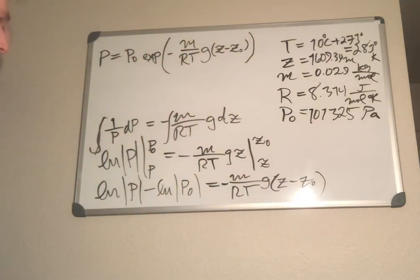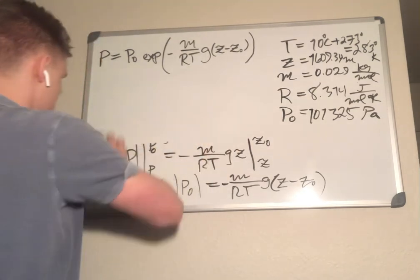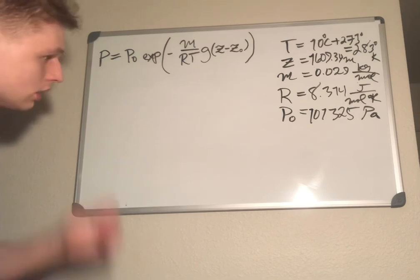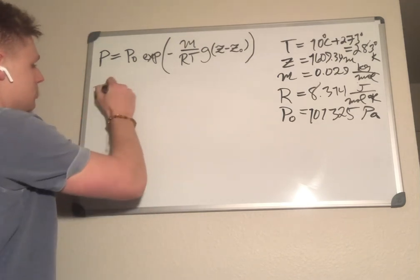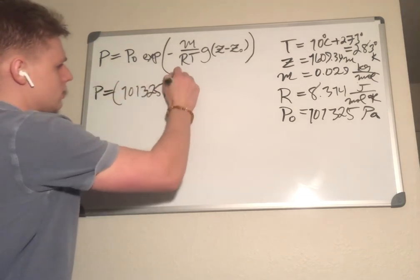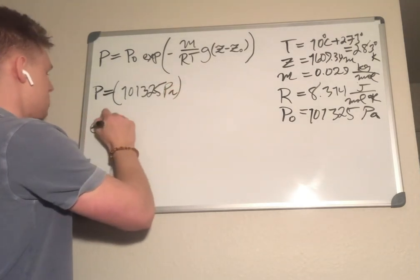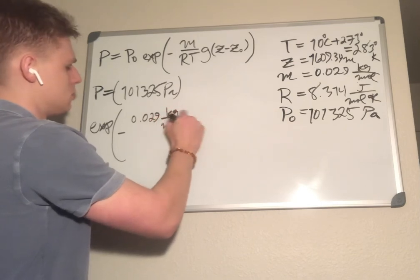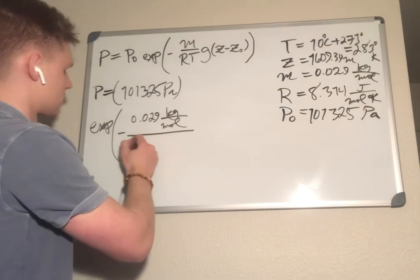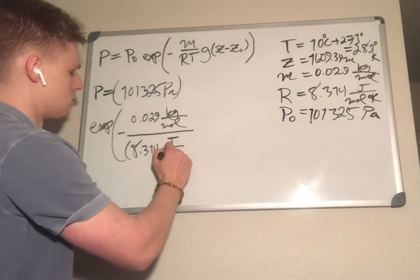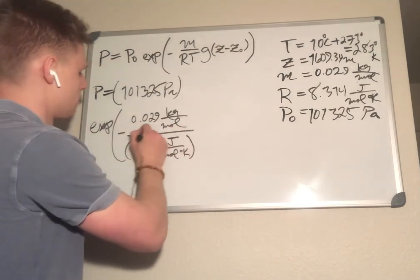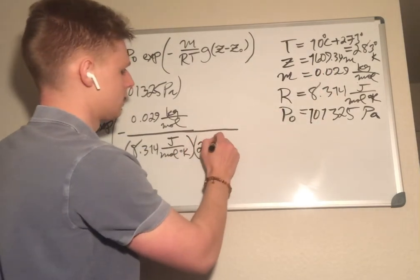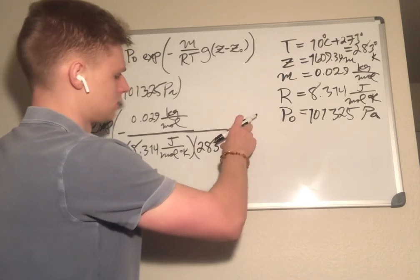We're stuck with this whiteboard. So P is equal to 101,325 pascals exp of negative 0.029 kilograms per mole divided by 8.314 joules per mole degrees kelvin. I'm going to multiply this by T, and since it's in kelvin, 283.15.